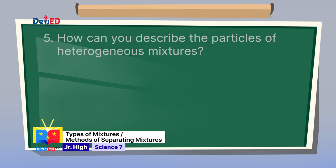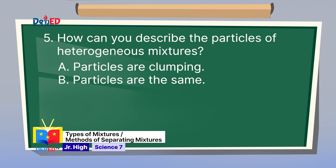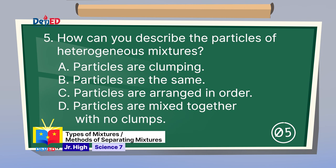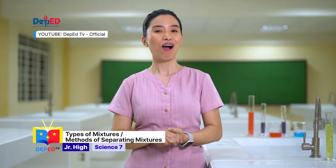Number 5: How can you describe the particles of heterogeneous mixtures? A. Particles are clumping. B. Particles are the same. C. Particles are arranged in order. D. Particles are mixed together with no clumps. Letter A — particles are clumping — describes the particles of heterogeneous mixture. The correct answer is letter A.